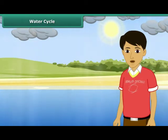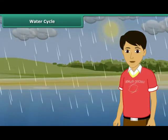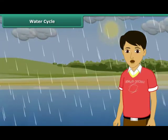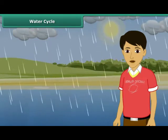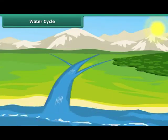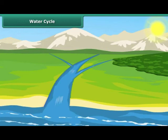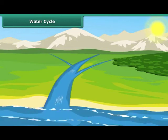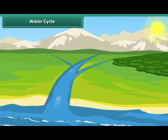When the clouds become too heavy, the water droplets in them fall on Earth in the form of rain, hail, sleet or snow. This process is known as precipitation. The water received by Earth as rain, hail or snow then goes back into the oceans, seas, rivers and lakes.